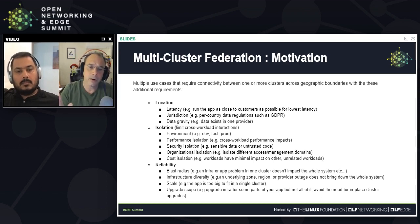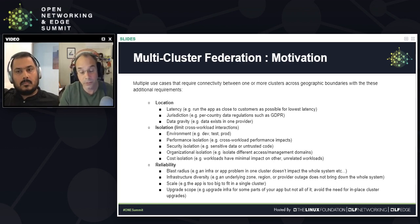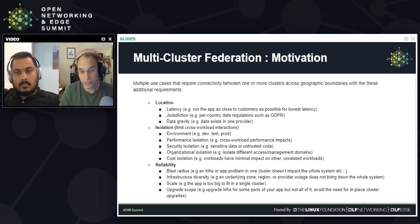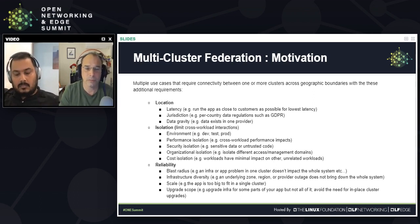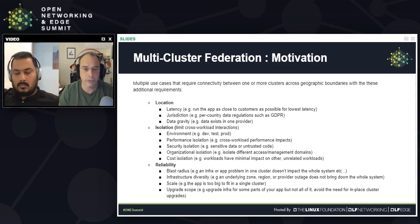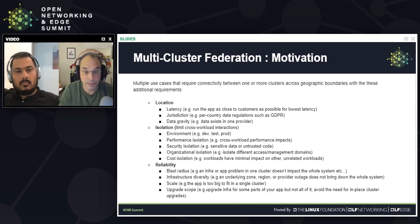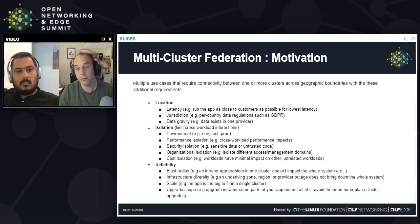Finally in this area: cost isolation. This is related to workloads impacting other workloads — you don't want the cost of one workload to significantly impact another unrelated workload. For example, in Kubernetes there's a shared key-value store, and the cost of that equipment — you don't want it to be disproportionately used by one workload or organization over another without expecting that.